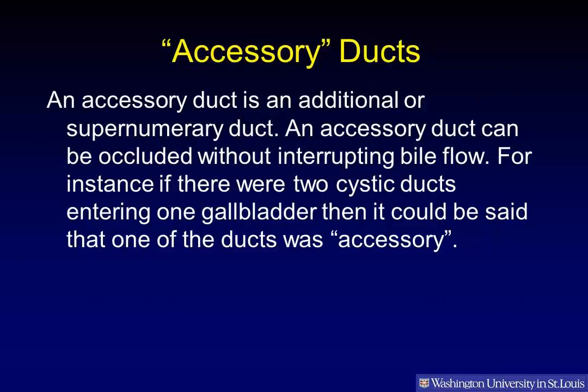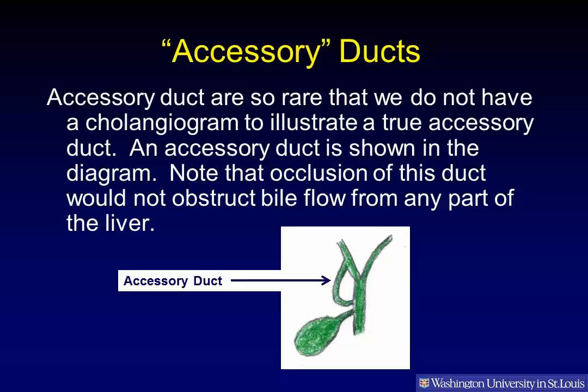Accessory ducts. An accessory duct is an additional or supernumerary duct that can be occluded without interrupting bile flow. For instance, if there were two cystic ducts entering one gallbladder, then one of the ducts could be said to be accessory. Accessory ducts are so rare that we do not have a cholangiogram to illustrate a true accessory duct. Note that occlusion of this duct would not obstruct bile flow from any part of the liver.